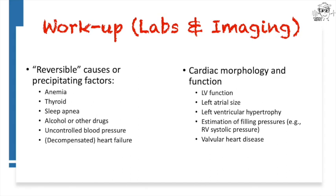In terms of workup, you have to look for reversible causes or precipitating factors. I put this in quotes because AFib itself is not reversible — once a patient has had atrial fibrillation, we treat them as having that condition lifelong in general. The factors that increase the burden of AFib are reversible, and we want to address those: anemia, thyroid disease, sleep apnea, alcohol or other drug use, uncontrolled blood pressure, and decompensated heart failure. Address these with history, labs, and workup, and correct them with treatment.